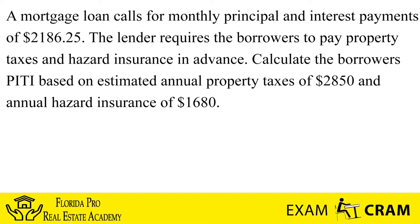What we need to do is read the question carefully. A mortgage loan calls for monthly principal and interest payments of $2,186.25. The lender requires the borrowers to pay property taxes and hazard insurance in advance. We need to calculate the borrower's PITI based on estimated annual property taxes of $2,850 and annual hazard insurance of $1,680.